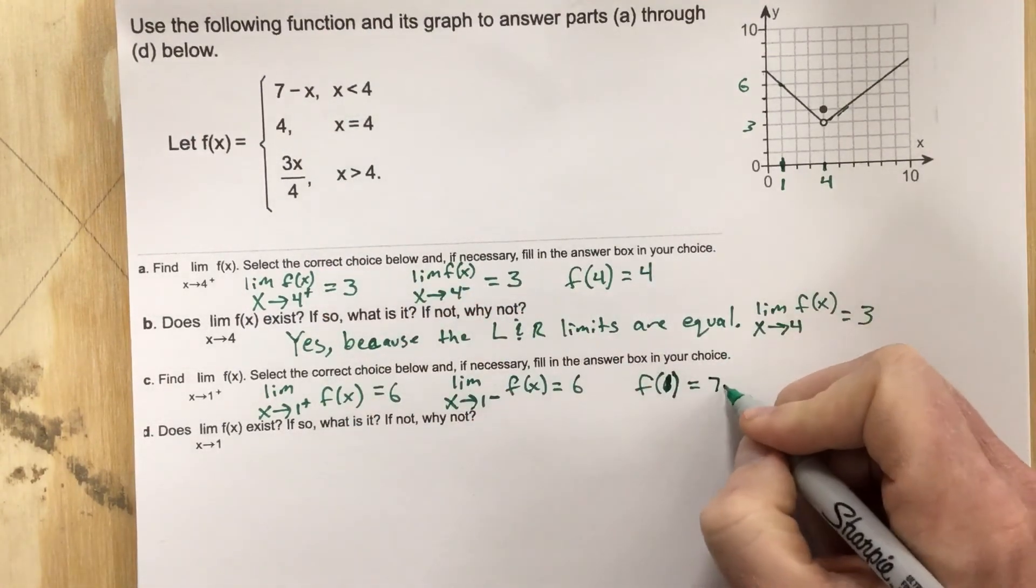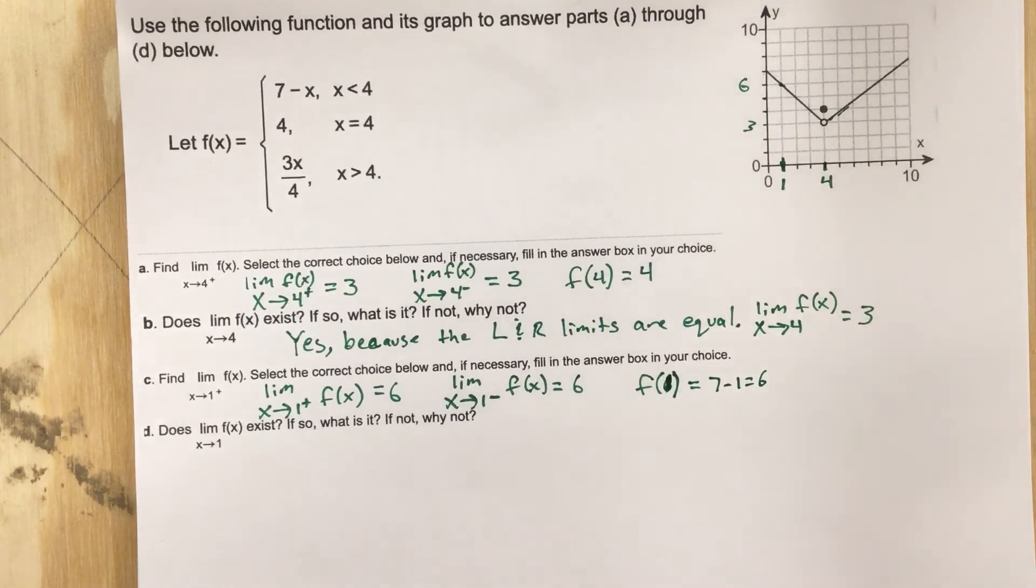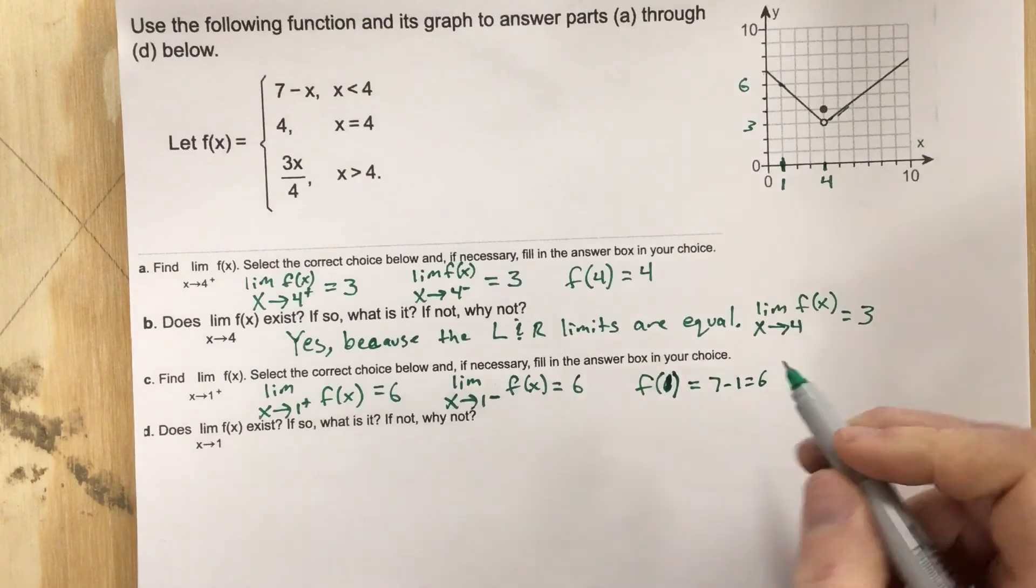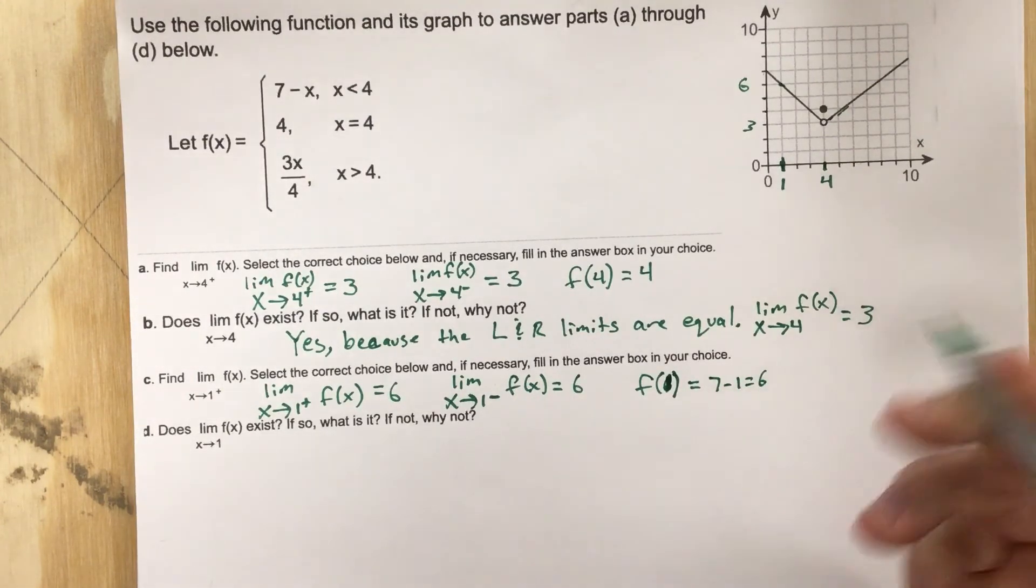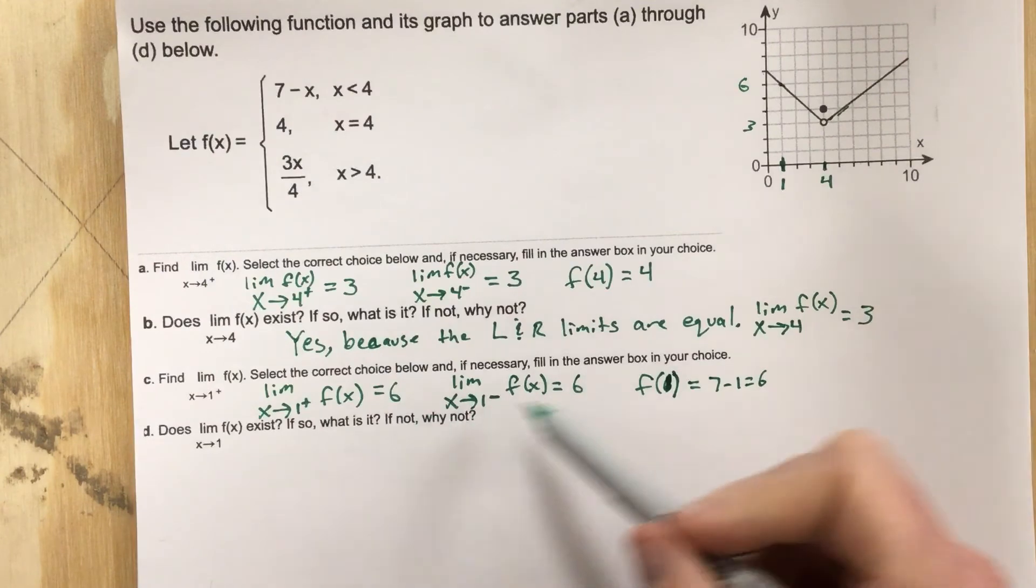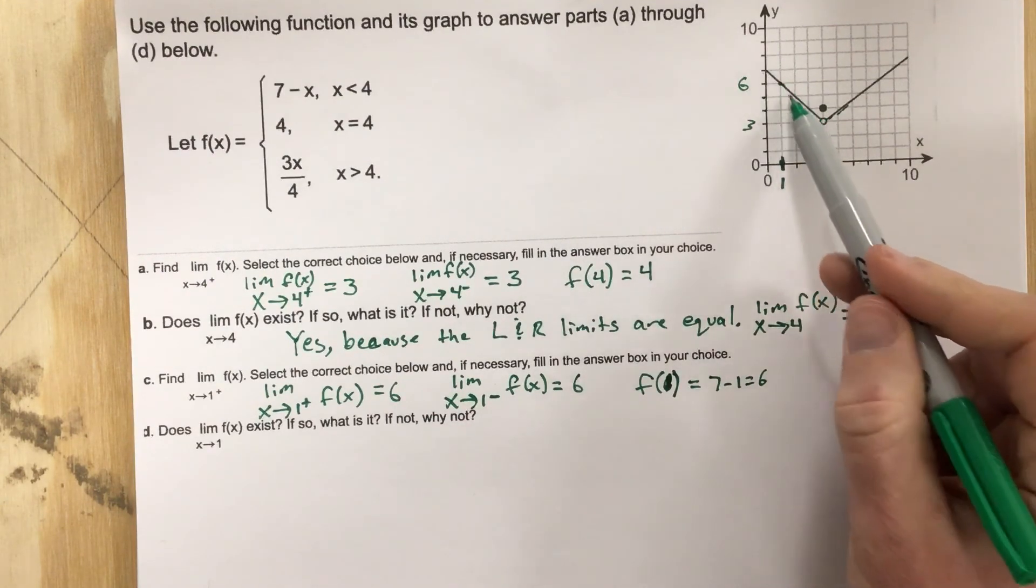We get 7 minus 1, which is 6. So the limit in this case is exact same as it being defined there. So just meaning that of course we're going to get the limit to be 6 because it's defined at 6 and it's along this linear line here.